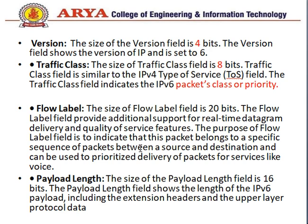Next is flow label. The purpose of the flow label is to indicate that a packet belongs to a specific sequence of packets between the source and destination, and it can be used to prioritize delivery of packets — so we can identify priority flows in the network. The payload length field is 16 bits and shows the length of the IPv6 payload including extensions.